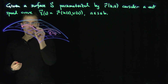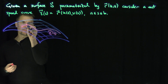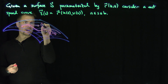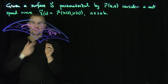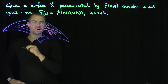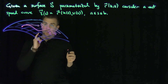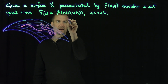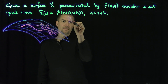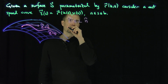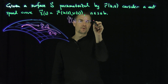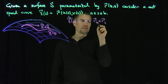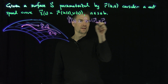What do I know? If I compute gamma prime at a particular point, so gamma prime, or gamma dot, is a tangent vector — that's my T-hat of S. And this is perpendicular to the normal vector. So we know that gamma dot of S is perpendicular to N-hat, which is the unit normal of the surface, equal to R_U cross R_V over the length of R_U cross R_V.